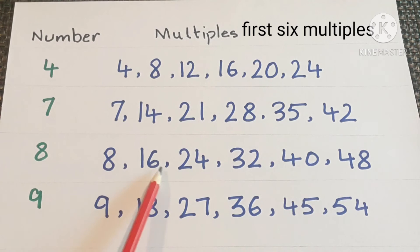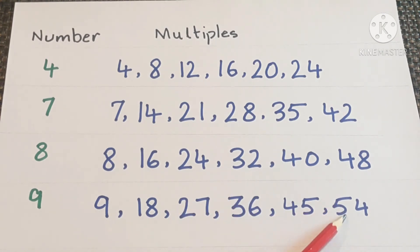Multiples are 8, 16, 24, 32, 40, 48. Number is 9. Multiples are 9, 18, 27, 36, 45 and 54.